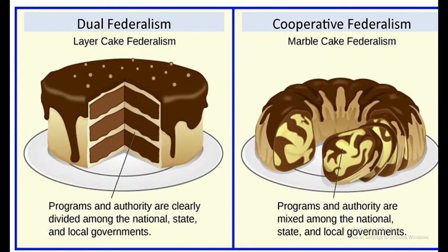This is an example of dual federalism and cooperative federalism. In dual federalism, authorities are clearly divided in layers: the national government at the top, the state government in the middle, and the local government at the bottom. But in cooperative federalism, authorities are mixed or not clearly divided. Sometimes there are chances of overlapping of powers or authority between the three levels of government, particularly the national and state level.